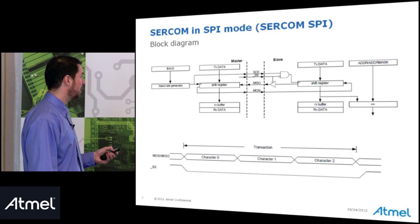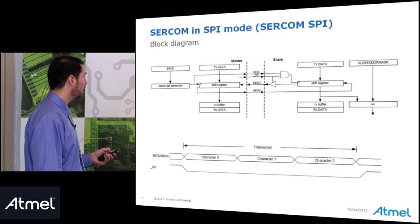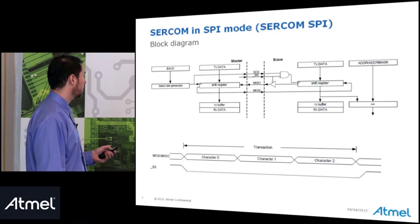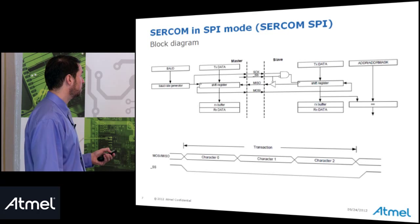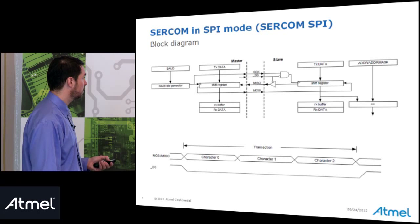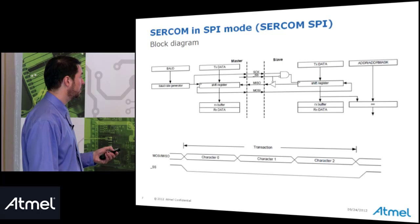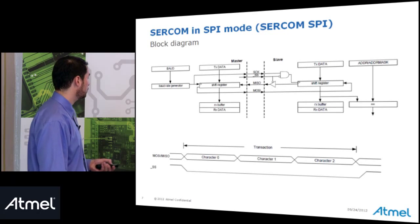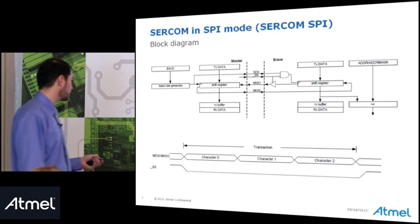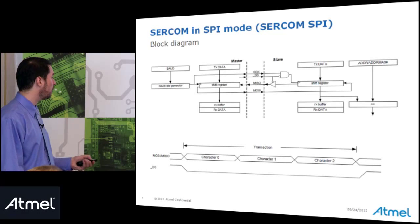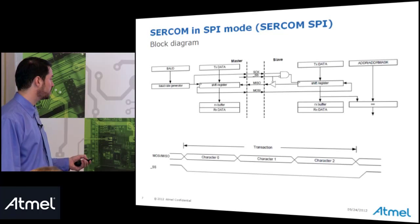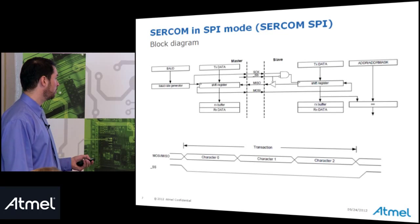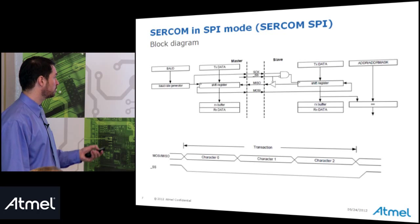The serial clock from the baud rate generator only clocks the slave's shift register when the slave select line is low. The shift register in turn clocks the MISO and MOSI lines. There is a similar address match mechanism after which data is forwarded into the processor.